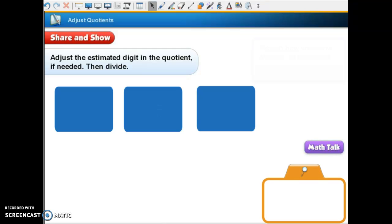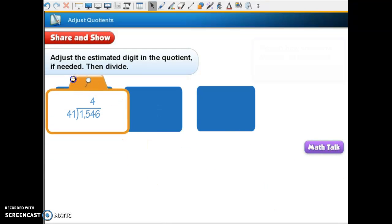Okay, let's see where this is. 1,546 divided by 41, and they're telling you to start with a 4. How do you think they got a 4? 40. They rounded our divisor to be 40 and our dividend to be 1,600, so they started with a 4. Let's see if that works.